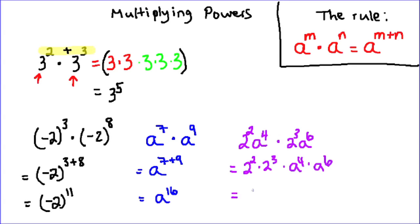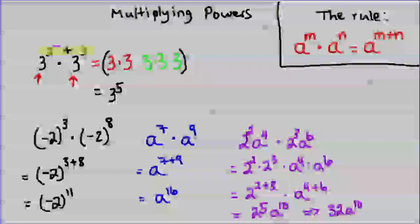Now I'll use my multiplication of powers rule. 2 to the power of 2 plus 3 times a to the power of 4 plus 6 which then simplifies 2 to the power of 5 and a to the power of 10. Now if I wanted to, I could also expand that 2 to the power of 5 to make that 32 a to the power of 10. And that is how we can use our multiplying powers rule to simplify situations where we have powers with the same base.